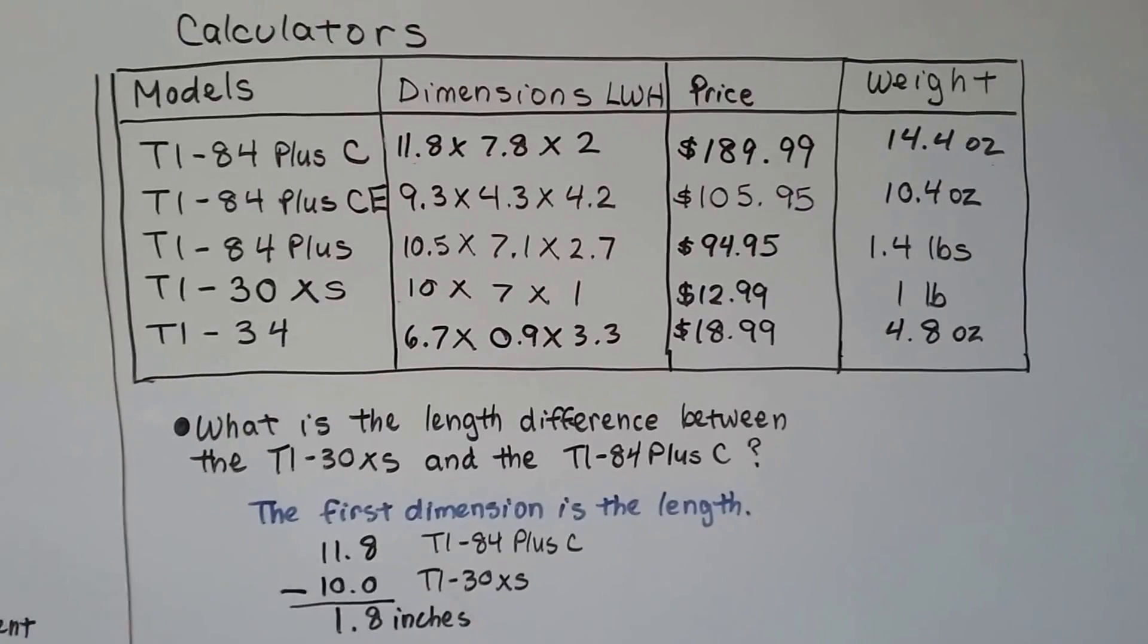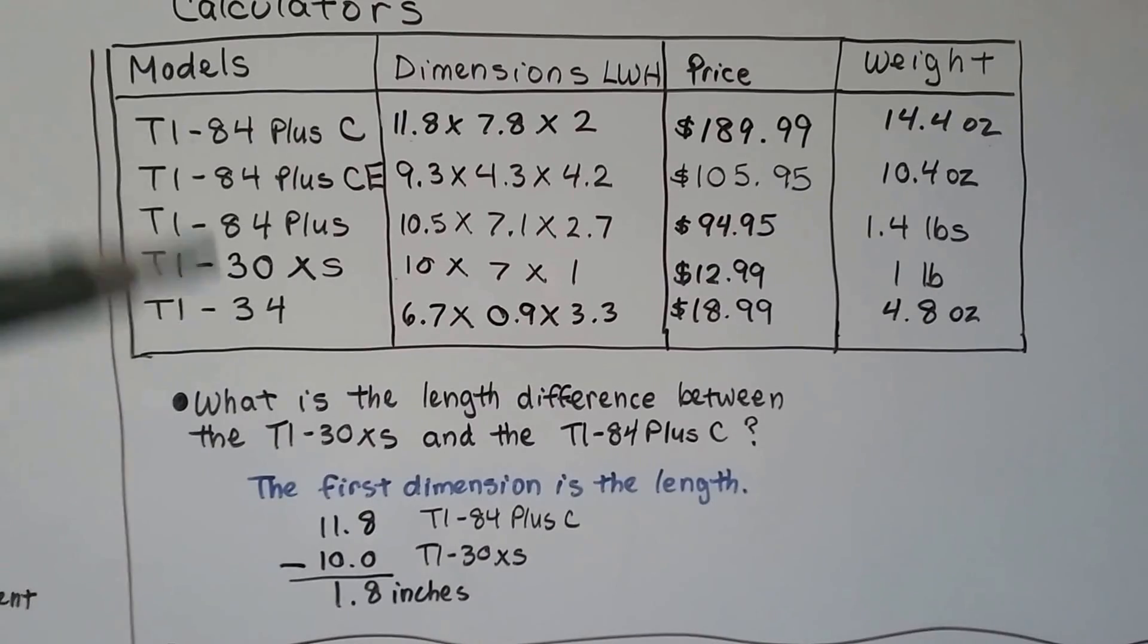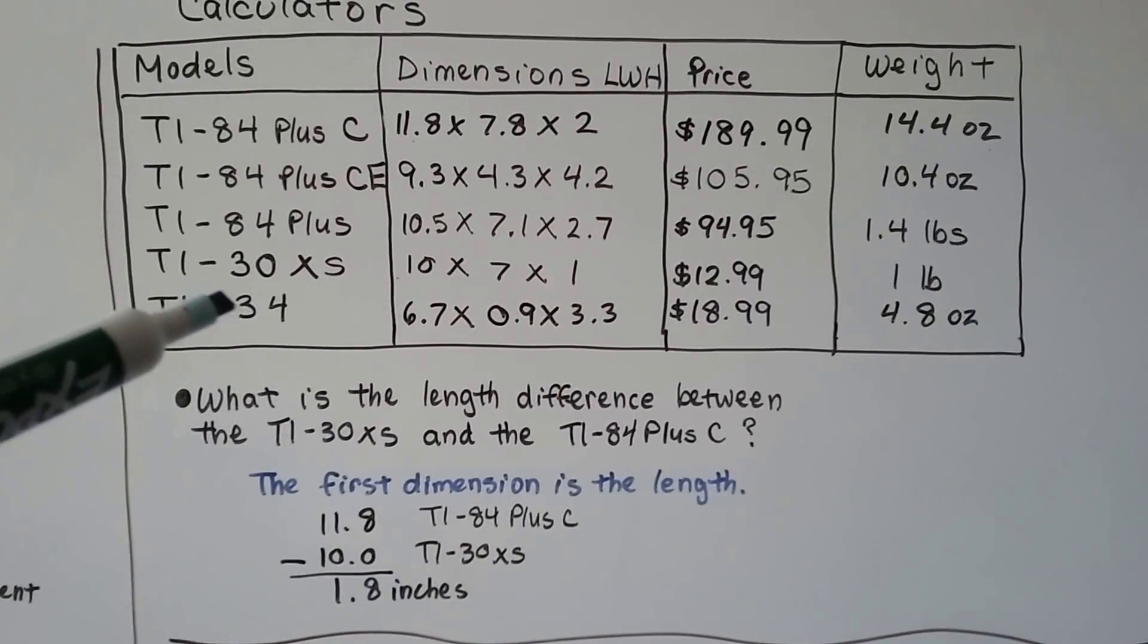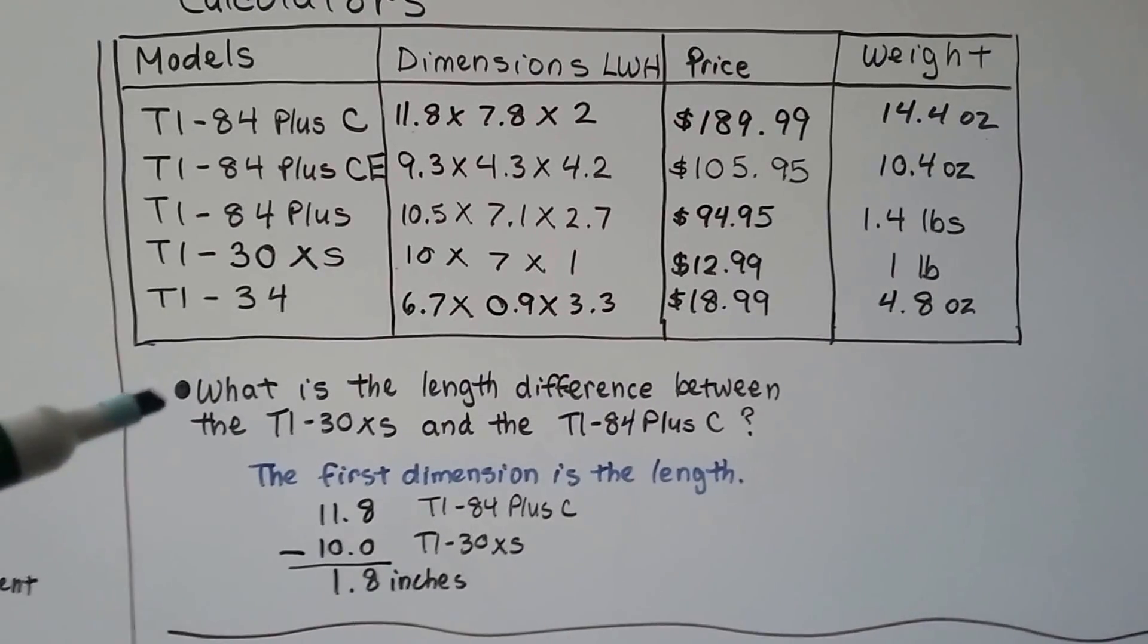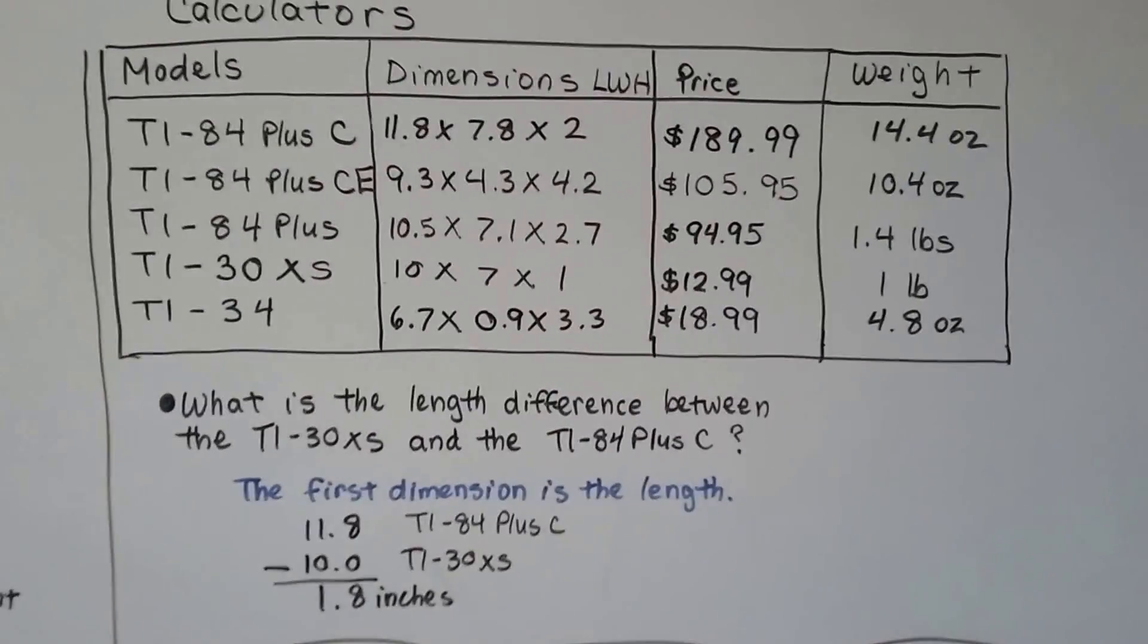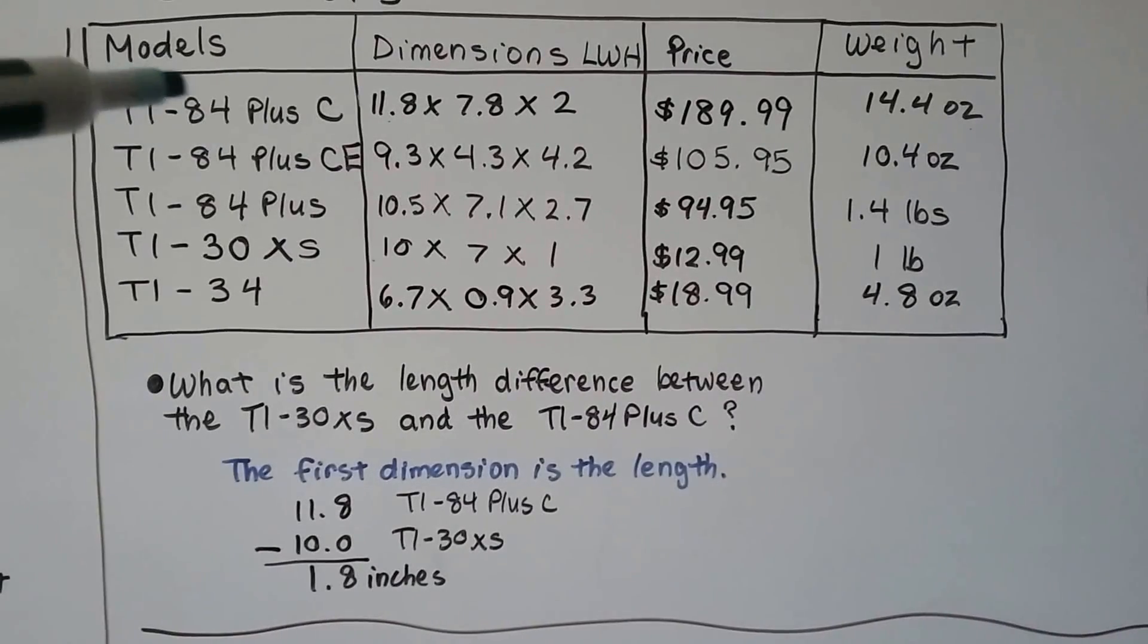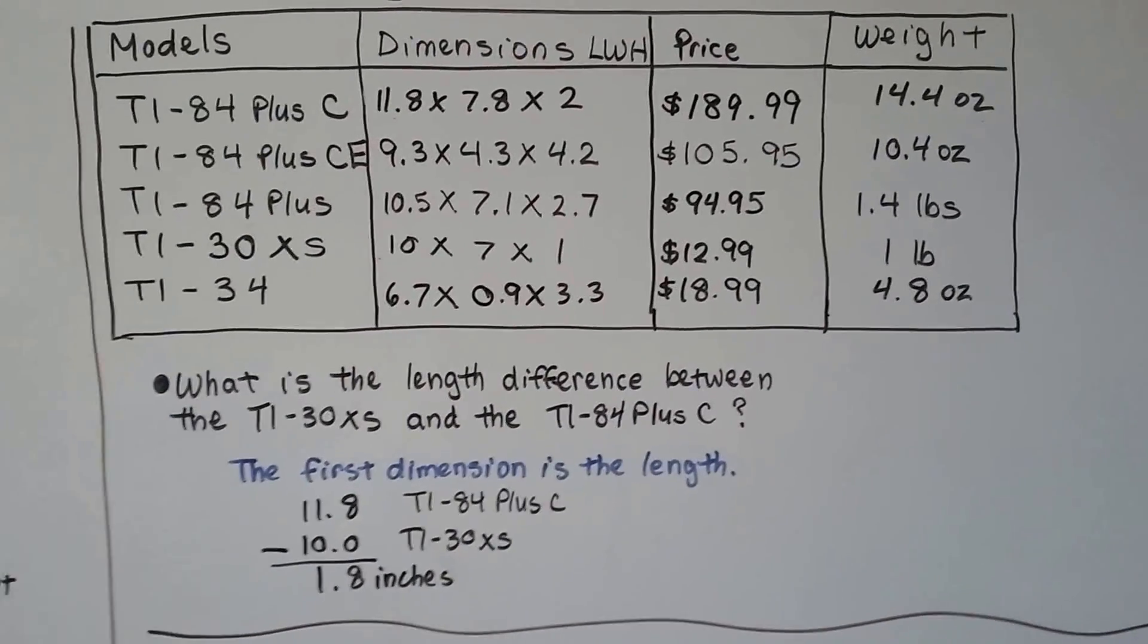Now, you're going to come across problems like this in the GED and they all look so similar. You could be looking very quickly and think that that's an 8 because you didn't pay that close of attention to it. So you might think that's TI-84 because there's all these 84s. So be very, very careful when you're looking at these tables.